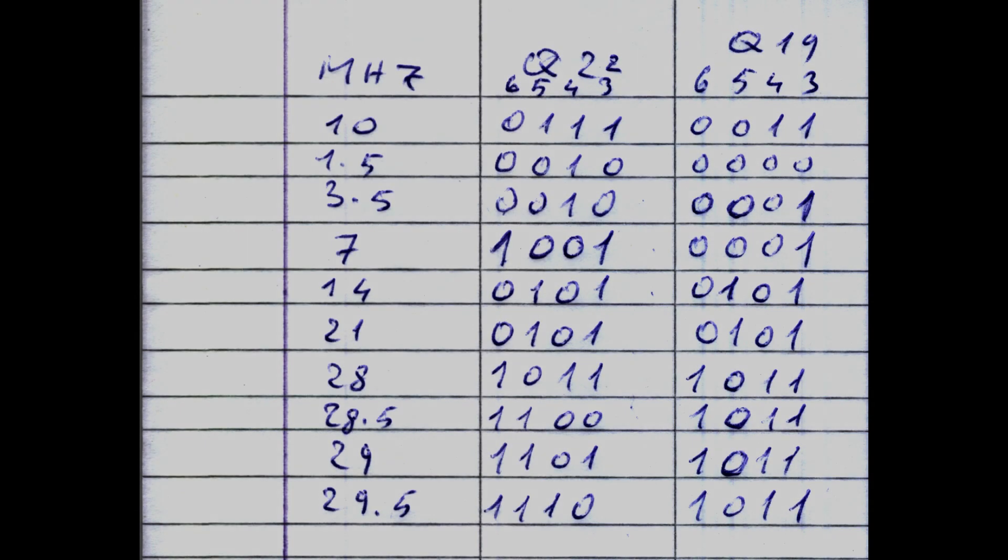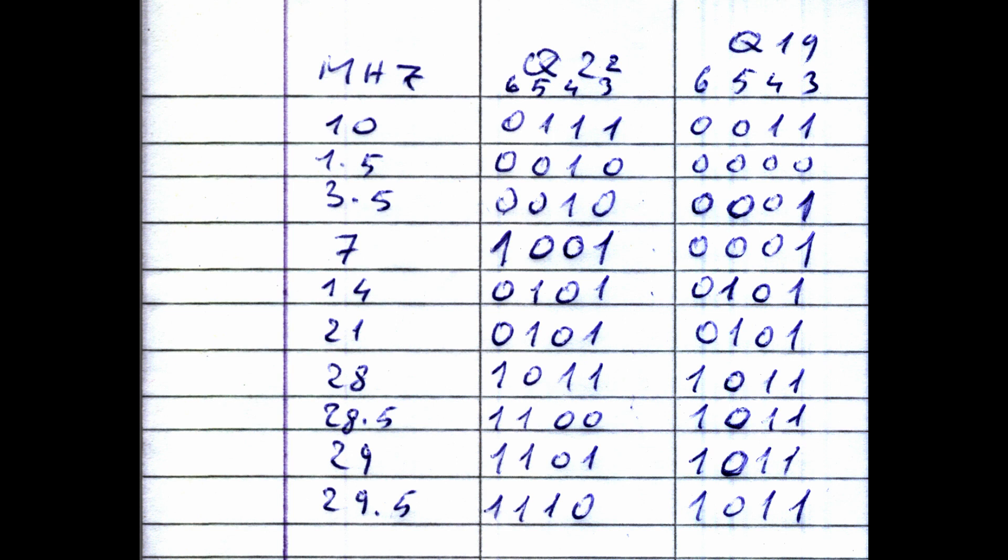After a few minutes' work, I've obtained this table. Of course, when I've measured a voltage close to 5V, I have indicated it with its logic equivalent of 1. A voltage close to 0V instead corresponds to the logic 0.